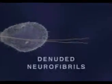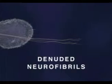Consequently, the neurite's microtubules begin to disassemble into free tubulin molecules, leaving the neurite stripped of its supporting structure. Ultimately, both the developing neurite and its growth cone collapse, and some denuded neurofibrils form aggregates or tangles, as depicted here.